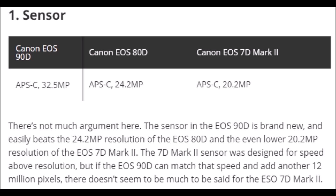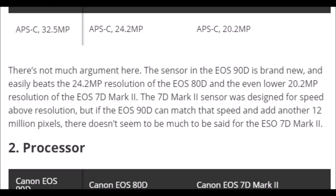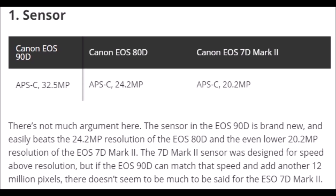ส่วนเจ้า 7D Mark II ซึ่งถือว่าเป็นกล้องที่ภาษาคนถ่ายภาพถูกออกแบบมาเพื่อความทนทาน ยังใช้ 20 ล้านพิกเซล ถ้าคุณชอบความละเอียดเยอะก็ไปตัว 90D แต่ถ้าชอบความละเอียดปานกลาง 80D ก็ถือว่าใช้งานได้ดี การเปลี่ยนแปลงของเซ็นเซอร์นี้ก็เปลี่ยนแปลงไปตามยุคสมัย อย่างที่เคยบอกว่าเมื่อไรก็ตามที่มีการออกรุ่นตัวใหม่มา สิ่งที่จะมีการเปลี่ยนแปลงได้อย่างชัดเจนก็คือ 1. ISO จะดันได้สูงขึ้น